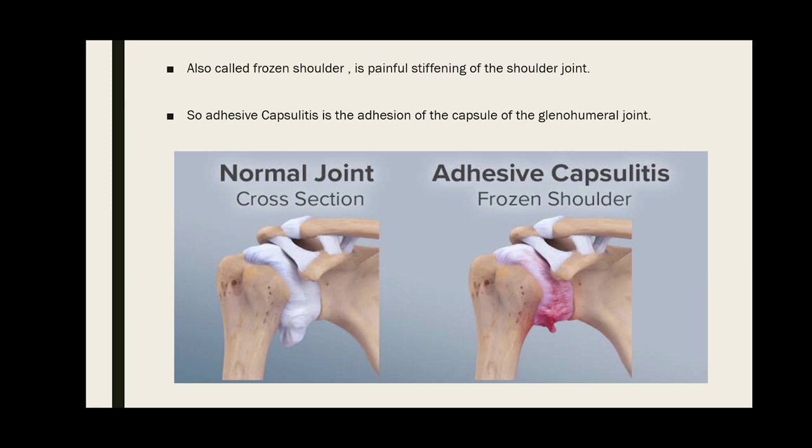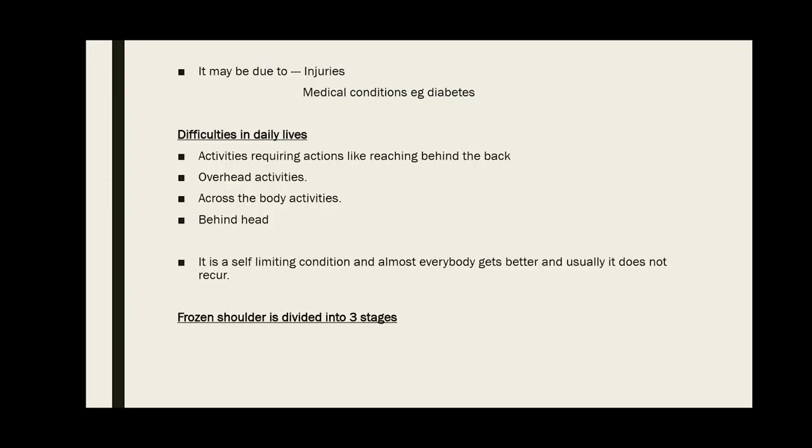Causes of frozen shoulder can be idiopathic, minor injuries, or medical conditions like diabetes mellitus or thyroid, and many others. Repetitive movement and immobility can be due to fracture, pain, or using a sling for any reason like stroke.